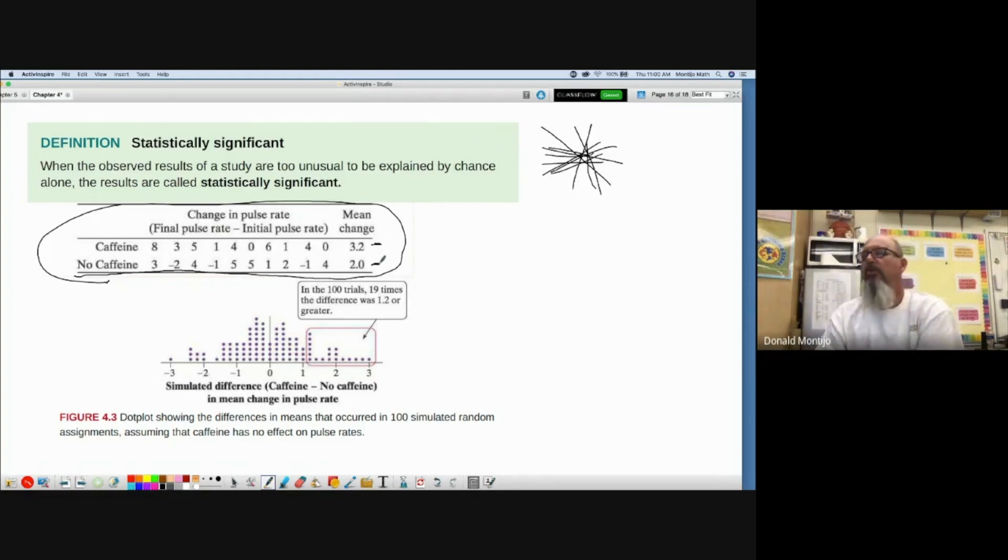Why did their pulse rate go up? Could be due to the placebo effect because they thought they were drinking caffeine. We're not sure why this happened. However, we can see there's a difference of 1.2. So it appears that if students drink caffeine, their pulse rate will increase on average 1.2 beats per minute more than if they don't drink caffeine. There clearly is a difference of 1.2 in the mean pulse rate change.